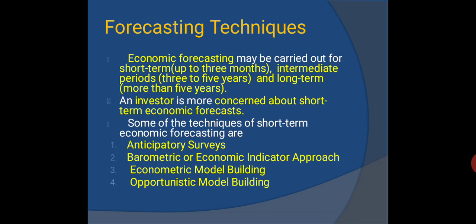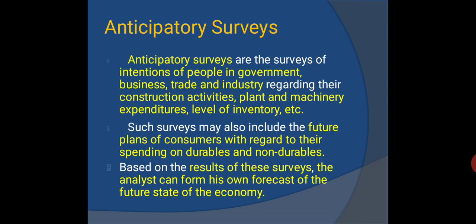Forecasting techniques may be carried out for the short term (up to 3 months), intermediate periods (3 to 5 years), and long term (more than 5 years). An investor is more concerned about short-term economic forecasts. Some techniques of short-term economic forecasting are: anticipatory surveys, barometric or economic indicator approach, econometric model building, and opportunistic model building. Anticipatory surveys are surveys of intentions of people in government, business, trade, and industry regarding construction activities, plant and machinery expenditures, and inventory levels, as well as consumers' future spending on durables and non-durables. Based on survey results, the analyst can form a forecast of the future state of the economy.